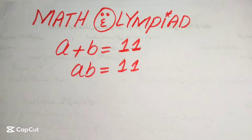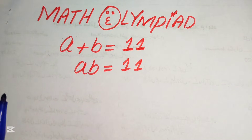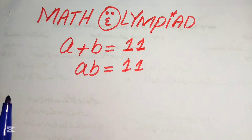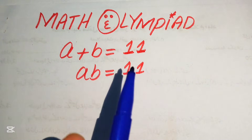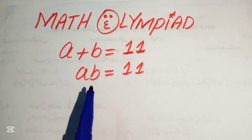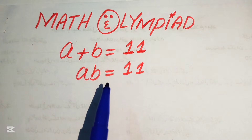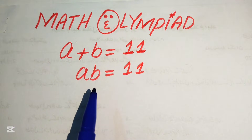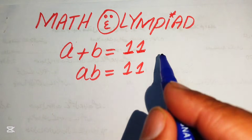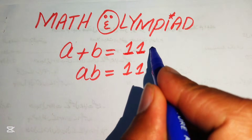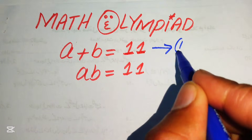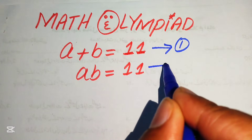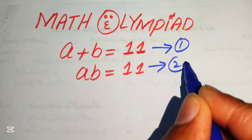Hello everyone, welcome to solve this nice algebra problem. So here we have a plus b equals to 11 and a times b equals to 11, and we solve this problem for the values of a and b. So here first we call this equation number 1 and we call this equation number 2.